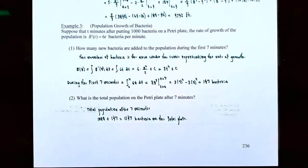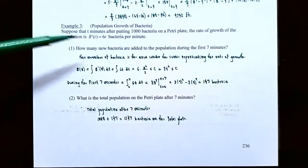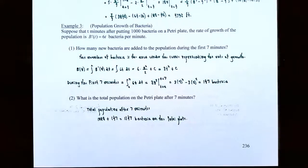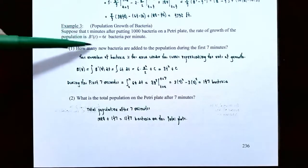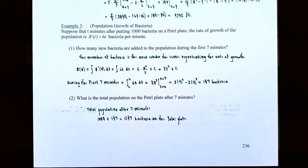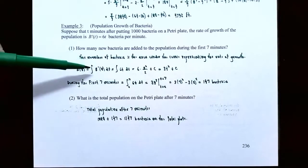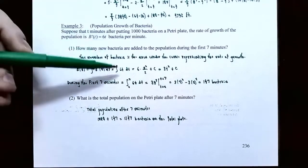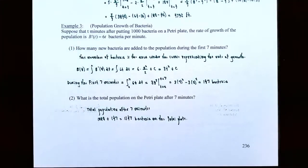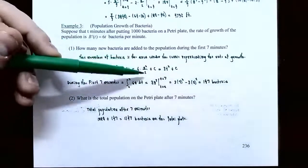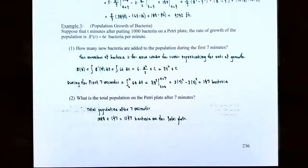Example 3: population growth of bacteria. Suppose that t minutes after putting 1,000 bacteria on a petri plate, the rate of growth of the population is capital B prime of t equals 6t bacteria per minute. Number one: how many new bacteria are added during the first 7 minutes? The number of bacteria is the area under the rate of growth curve. The antiderivative of B prime of t is capital B of t. Replacing B prime of t with 6t and integrating: 6 times t squared divided by 2 plus c, which simplifies to 3t squared plus c.